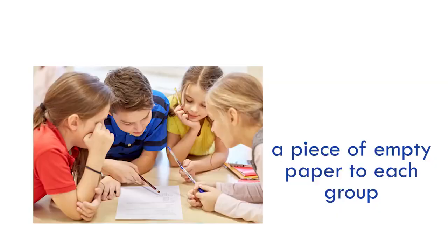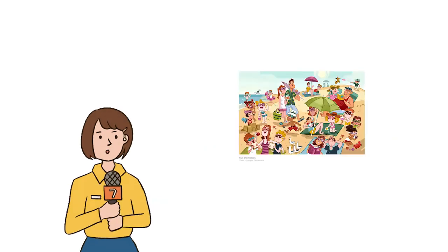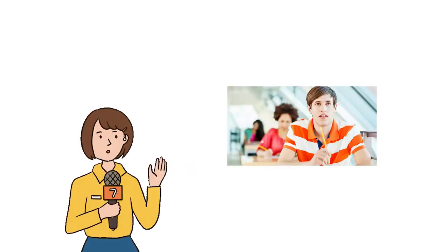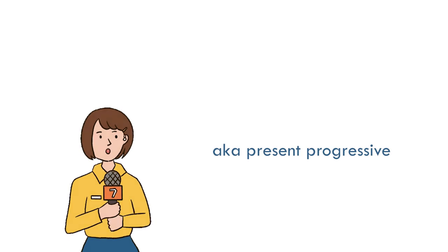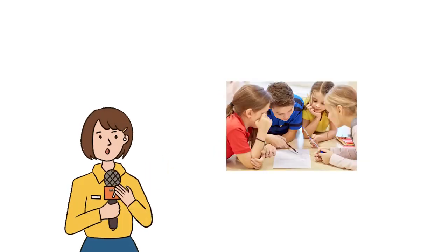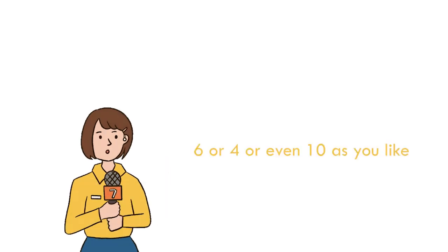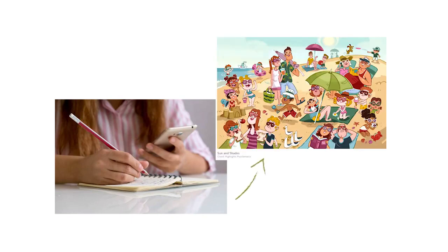Put your lovely students in groups and ask each group to have a piece of paper. Tell them: 'I'm gonna show you a picture for 20 seconds. You and your team members have to remember what the people in this picture are doing.' After the 20 seconds are over, you're allowed just then to start writing 6 sentences describing what you have seen using the present progressive. The point here is to let students try to remember as many actions — or in this case, verbs — as they can while applying the present progressive form in their heads.